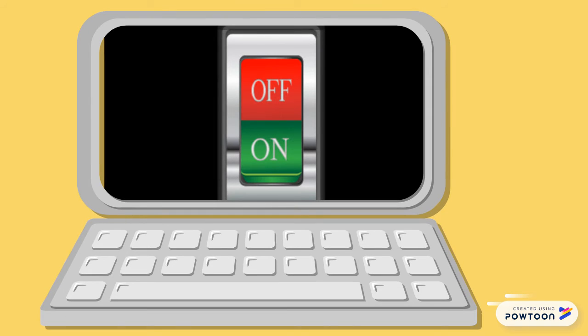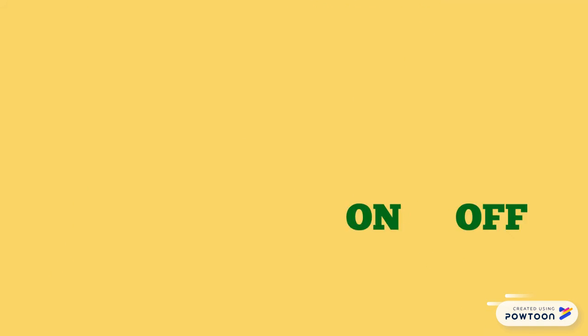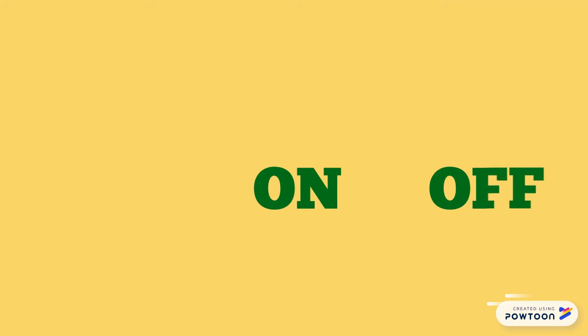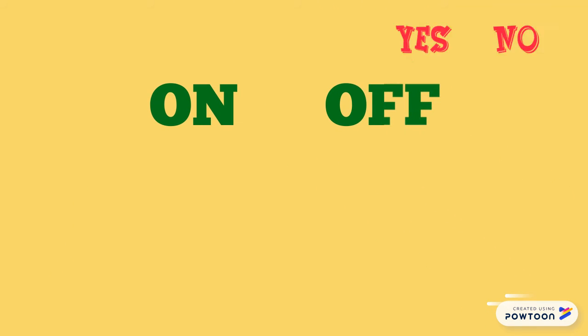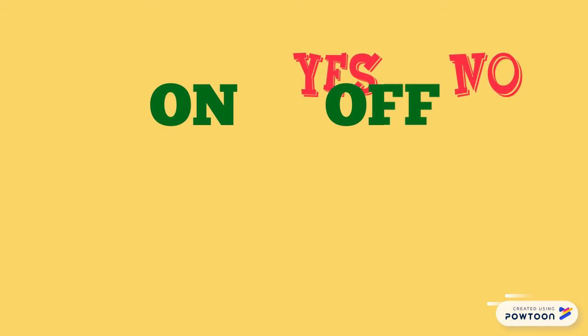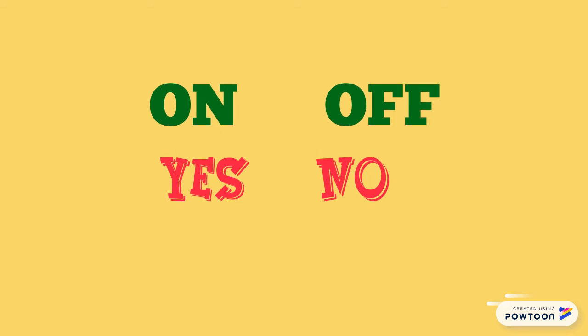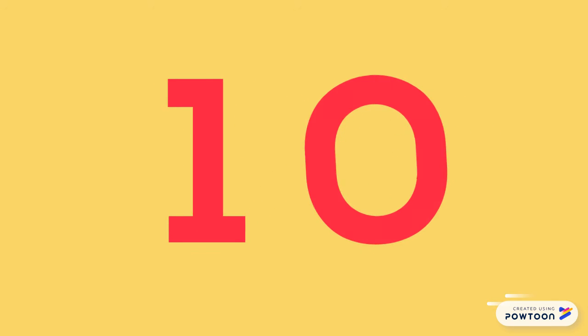The thing with computers is that although they appear elaborate, they're actually quite simple. Basically they are made up of billions of switches that can either be turned on or off. They can only recognise these two states — on, off, yes, no. They can only understand two digits: 1 and 0.